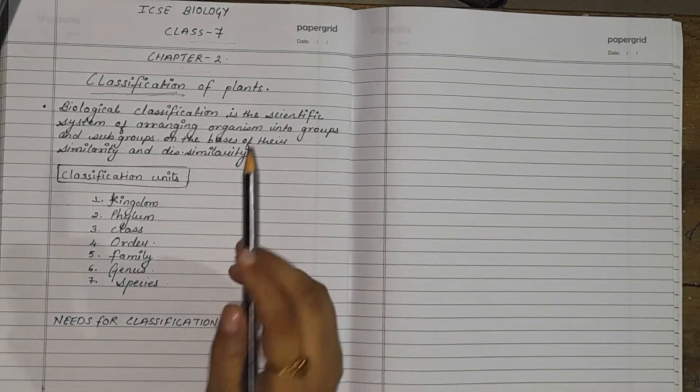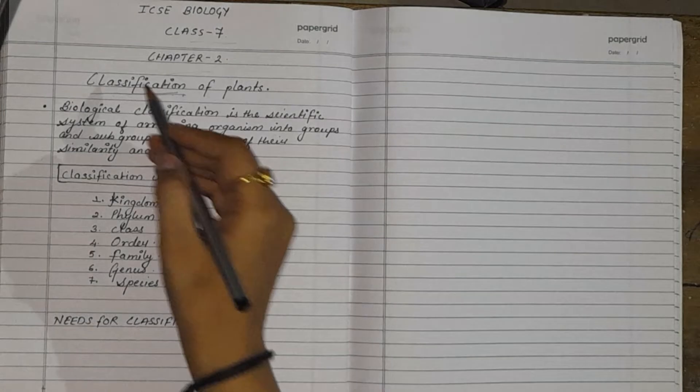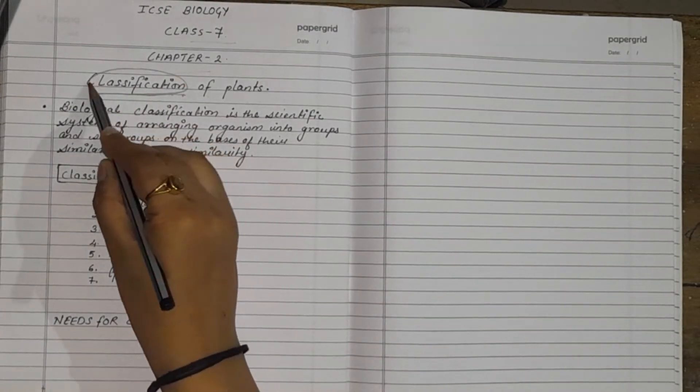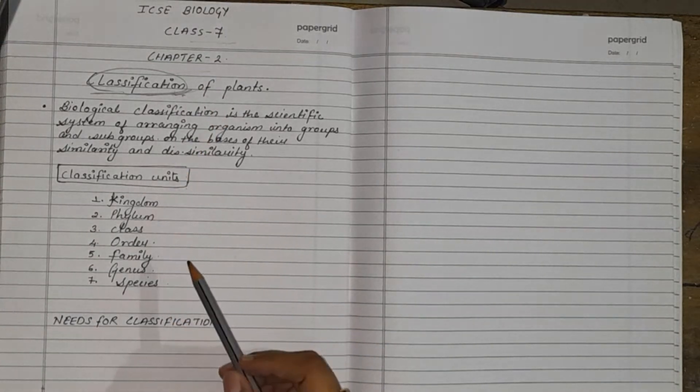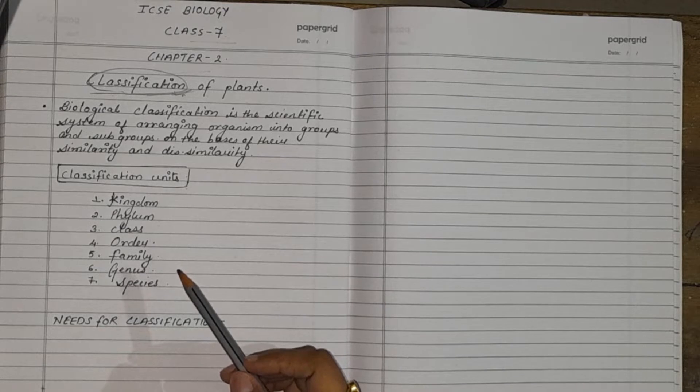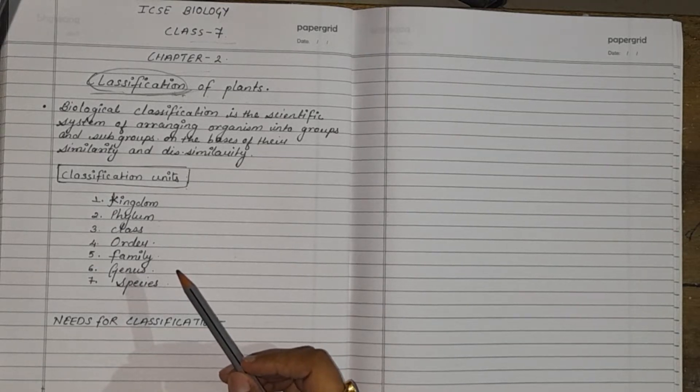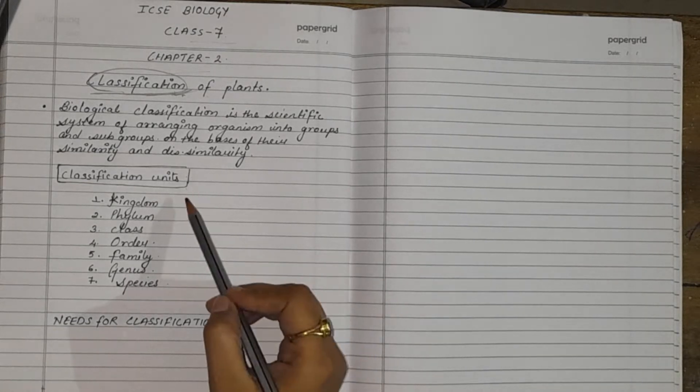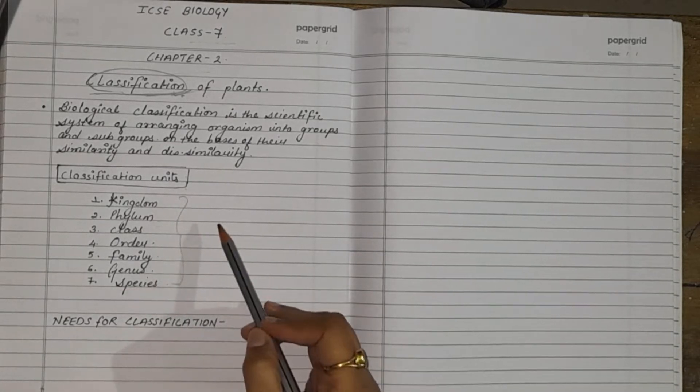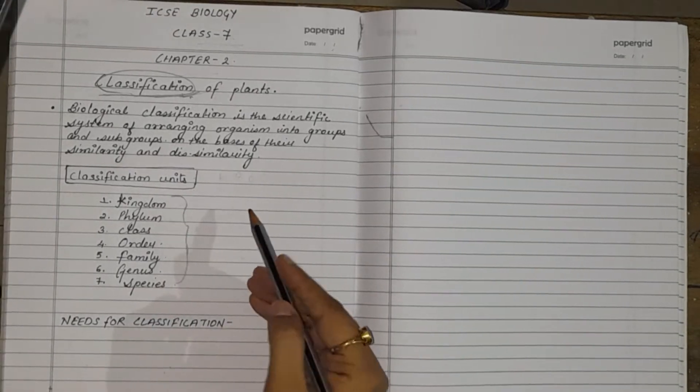The very first thing what we have to understand is the word classification. What does this word classification mean? The very first answer to classification is arranging or grouping the organism or anything in systematic groups, categories according to the specific characters. This classification is also known as taxonomy.